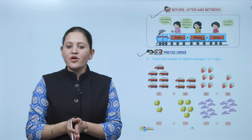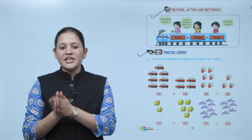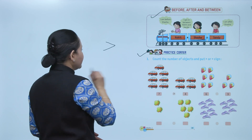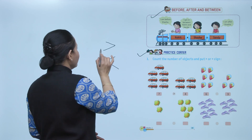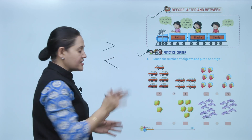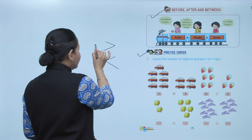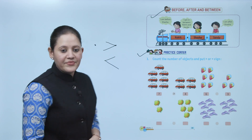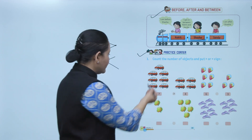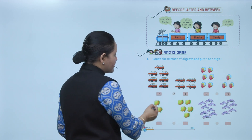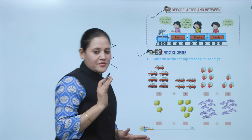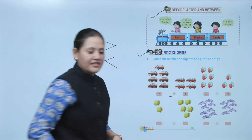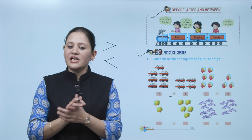Practice corner: count the number of objects and put the sign of greater than or less than. The number which is greater goes on the open-mouth side and the number which is less goes on the tail side. Here, seven cars and four — seven is more than four, so put the sign of greater than. Count the objects and accordingly put the sign.